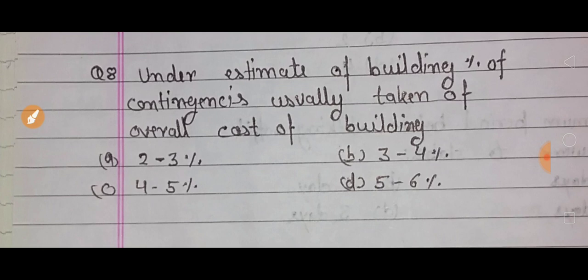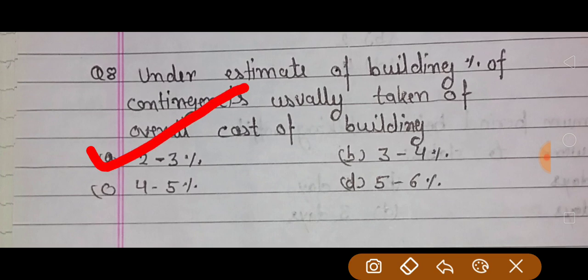अपना next question: under estimate of building, percentage of contingencies usually taken off overall cost of building. Building बनाने में जो पहले estimate किया जाता है, तो उस estimate का contingency charge कितना लिया जाता है? तो contingency charge होता है systematic way, ऐसे खर्चे जो पहले निर्धारित नहीं होते हैं, लेकिन in future वो कभी कभी आ जाते हैं, आकस्मिक होते हैं. तो वो जितना पहले अपने estimate बनाया है उसका 2 से 3% होता है. Correct answer is 2 to 3 percent.